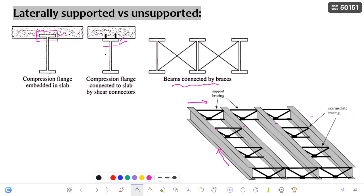Whatever flange is connected to the slab through shear connectors — in that case the compression flange is restrained. Here, these are the beams which are connected by braces, so that the compression flange is restrained in the lateral direction. Also, these are groups of beams connected by intermediate bracings. These are the support bracings which restrain the compression flange against lateral torsional buckling. These are the different ways in which you can restrain the compression flange against lateral torsional buckling.